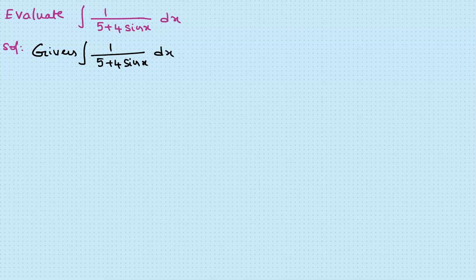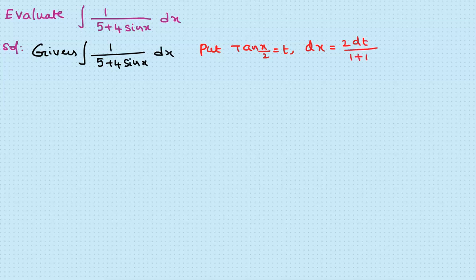This problem uses the integration by substitution concept. Put tan(x/2) equal to t. Then, differentiating with respect to x, dx equals 2dt by (1 + t²). From the sub-multiple angles formula, sin x equals 2t by (1 + t²). Substituting both values simplifies the problem.